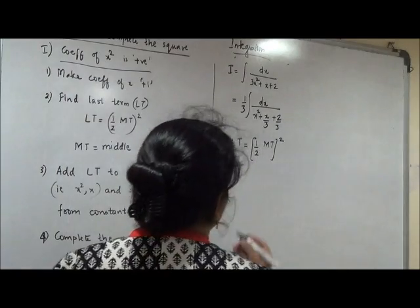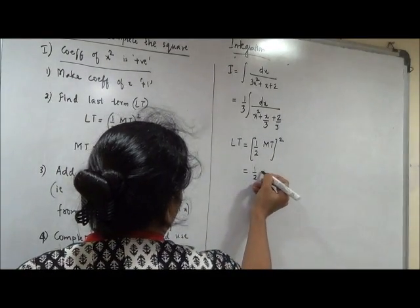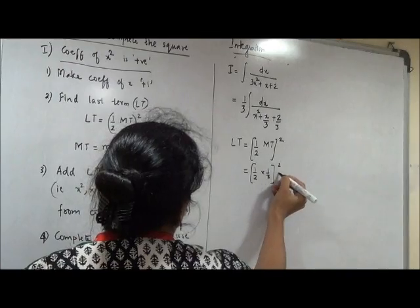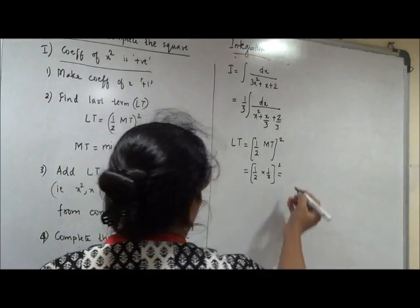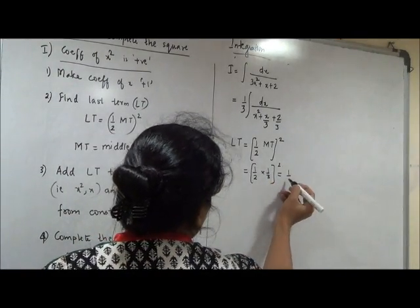So this will be half of 1 by 3 bracket square. So what's the number? 1 by 6 square is 36. This I am supposed to add and subtract.